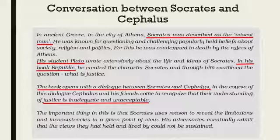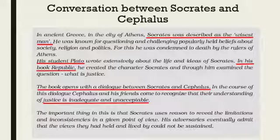So his student Plato thought about his mentor's ideology and he wrote a book called the Republic. The Republic is considered the most important book of political theory, written by Plato who was the student of Socrates. In this book Plato gave his theory regarding politics, and the central concept was justice — what is justice and how we can attain justice.